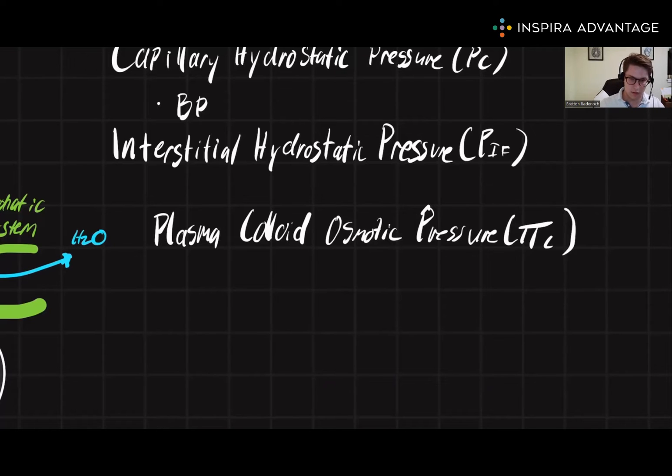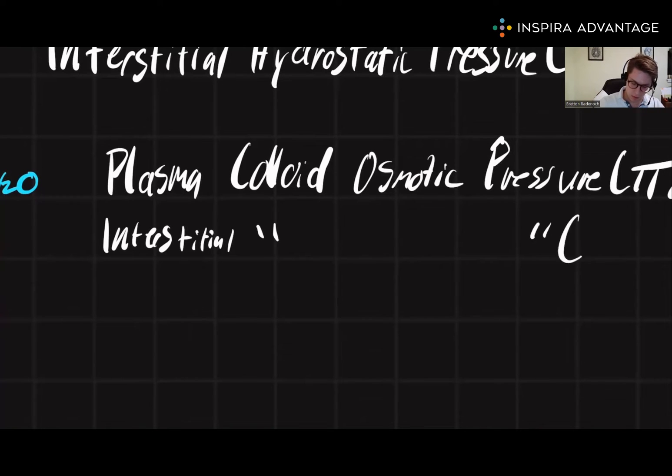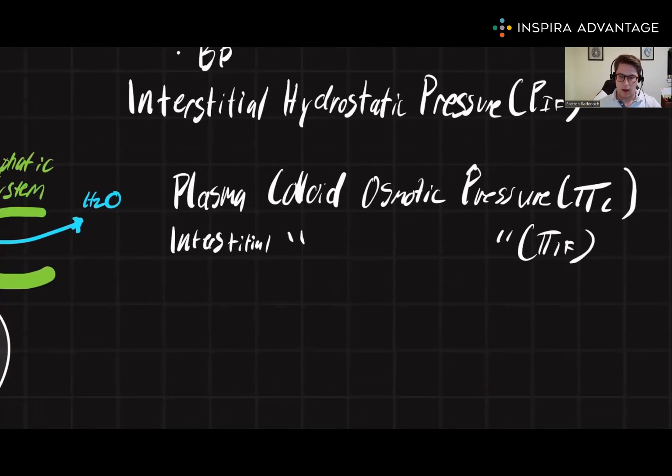The opposite to this force is called the interstitial colloid osmotic pressure, or pi IF. Now, pi IF is the osmotic pressure caused by the protein suspended in the interstitial fluid. The proteins here similarly cause water to move from the blood into the interstitial fluid.